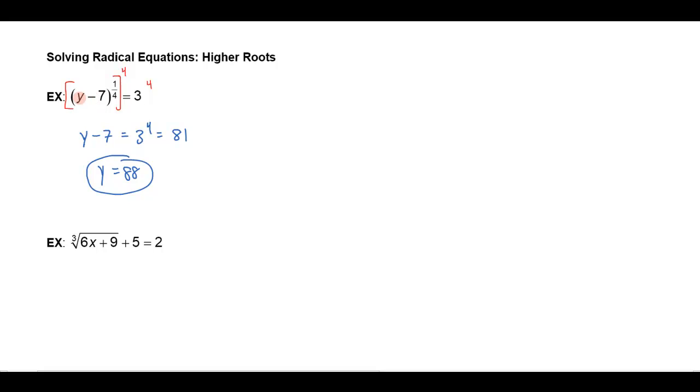You can check that real quick. 88 minus 7 is 81, and the fourth root of 81 is in fact 3.